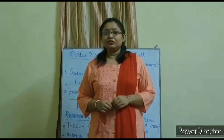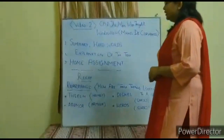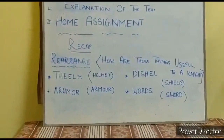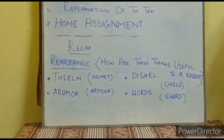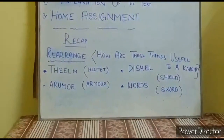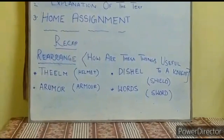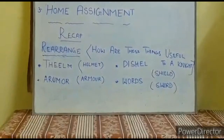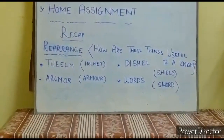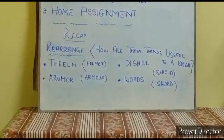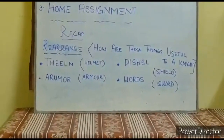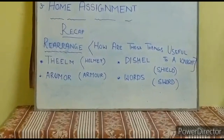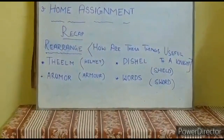Could you find the answer, students? Just see the quote once again. The first word, if you rearrange it, is helmet — which soldiers wear on their head. The second is armor — which soldiers wear on their chest to protect themselves. Next is shield — a piece of metal which soldiers carry to protect them. And the last word is sword — which is used to fight.